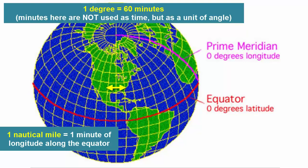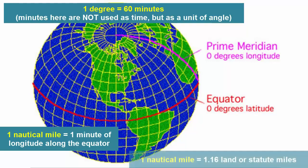As we travel away from the equator north or south, that distance shrinks. Land or statute miles, which are what we usually refer to when we use the unit mile, are smaller than nautical miles by about 20%. One nautical mile equals 1.16 land or statute miles.